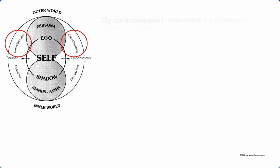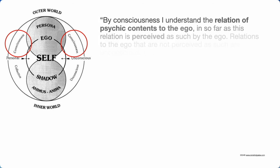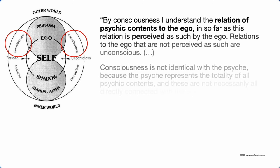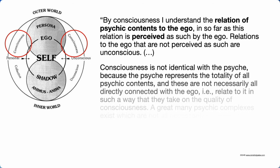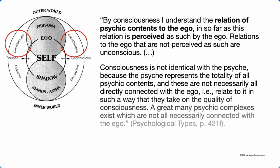By consciousness, I understand the relation of psychic contents to the ego insofar as this relation is perceived as such by the ego. Relations to the ego that are not perceived as such are unconscious. Consciousness is not identical with the psyche because the psyche represents the totality of all psychic contents, and these are not necessarily all directly connected with the ego.